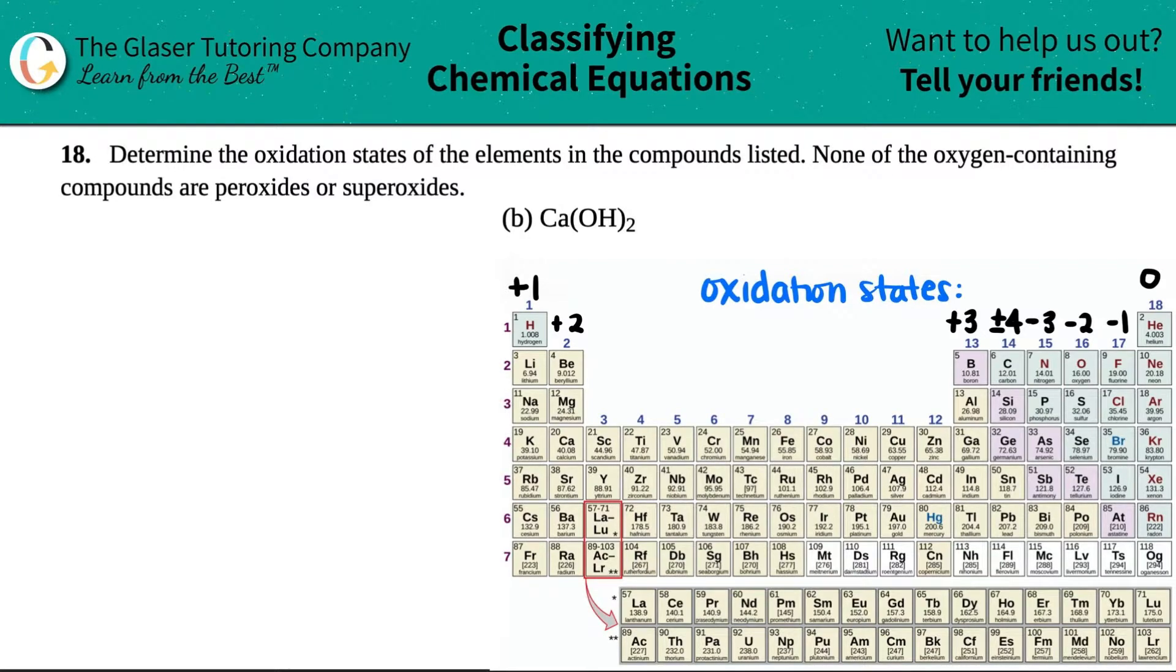Number 18: Determine the oxidation states of the elements in the compounds listed. None of the oxygen-containing compounds are peroxides or superoxides. We have letter B - we have to find the oxidation states of calcium, oxygen, and hydrogen in calcium hydroxide, Ca(OH)₂.